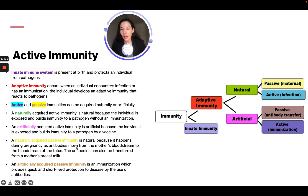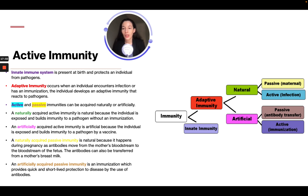Naturally acquired passive immunity is natural because it happens during pregnancy, as antibodies move from the mother's bloodstream to the bloodstream of the fetus, and antibodies can also be transferred through a mother's breast milk. Artificially acquired passive immunity provides quick and short-lived protection to a disease by the use of antibodies.